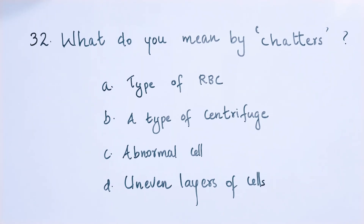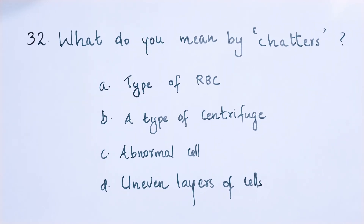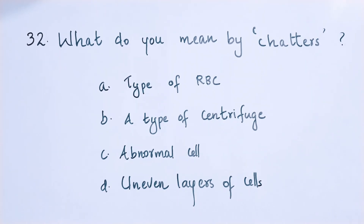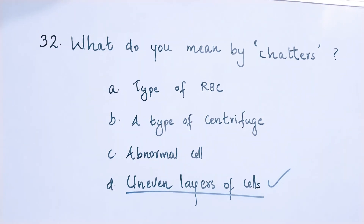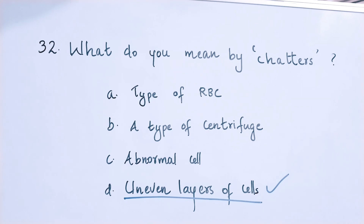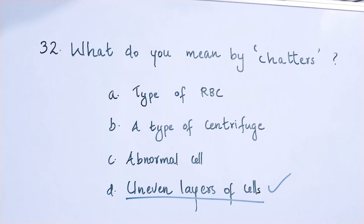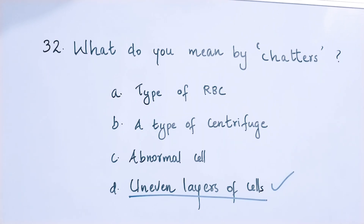Question number 32: What do you mean by chatters? Option A: type of RBC, option B: a type of centrifuge, option C: abnormal cell, option D: uneven layers of cells. The right answer is option D — uneven layers of cells. When preparing a blood smear, uneven layers of cells are called chatters.